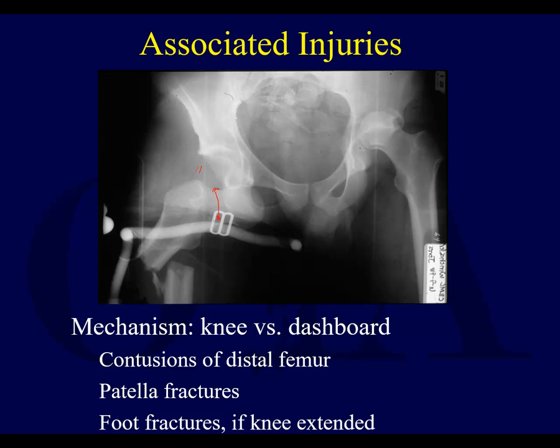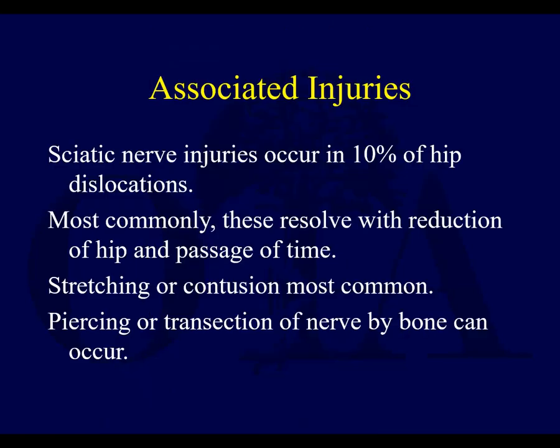The mechanism is often knee versus dashboard, so you can get associated injuries in the lower extremities with hip dislocations. Sciatic nerve injuries also occur — that nerve gets stretched when a hip dislocates, and you have to look for this. When a patient comes into the emergency room with a hip dislocation in the setting of major multiple trauma, make sure you get a good neurologic evaluation early on before the patient gets intubated or receives medications, since you won't be able to check for a nerve palsy later.